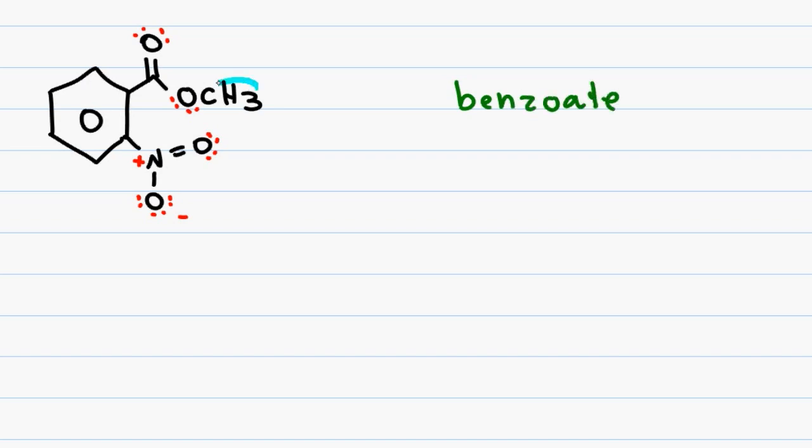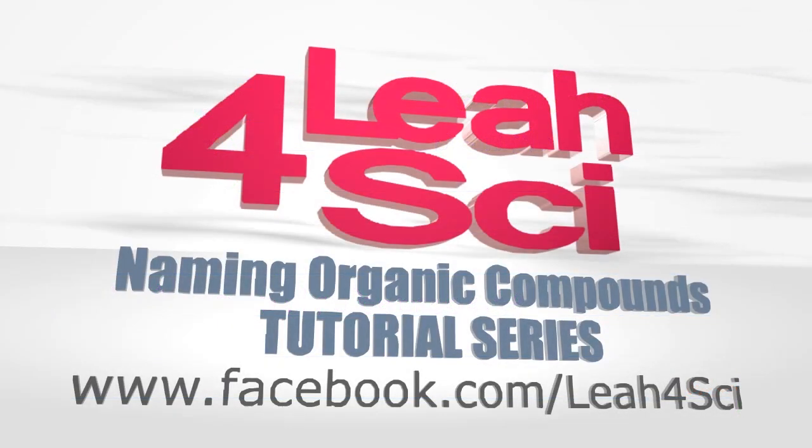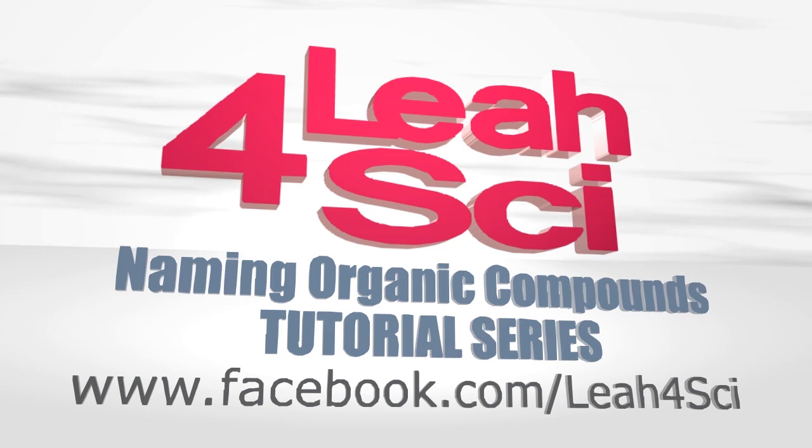We have a methyl substituent coming off the ester which gives me methyl preceding the entire name and we have a nitro group on the carbon directly near the ester. Referring to our little monster, we see that the nitro group is on the ortho position which gives me ortho nitro or simply O-nitro. When putting the name together, the ester substituent is the first thing mentioned and then the parent which gives me a final name of methyl ortho nitro benzoate or simply methyl O-nitro benzoate.